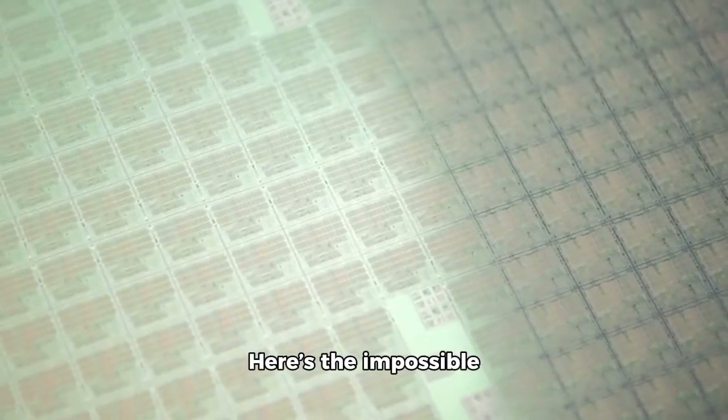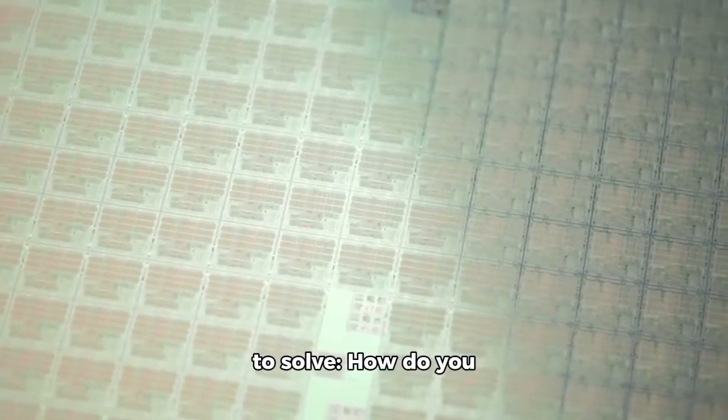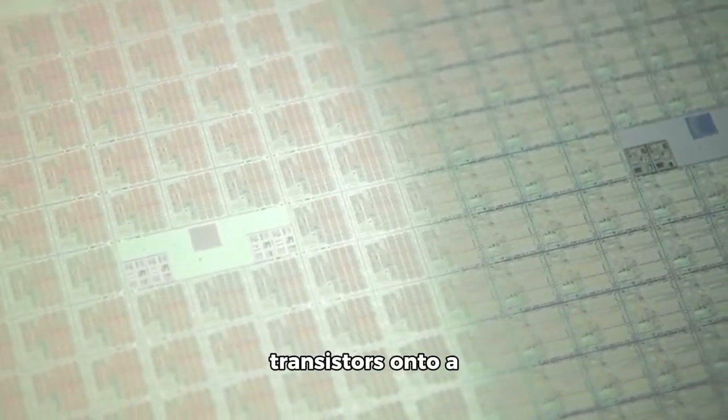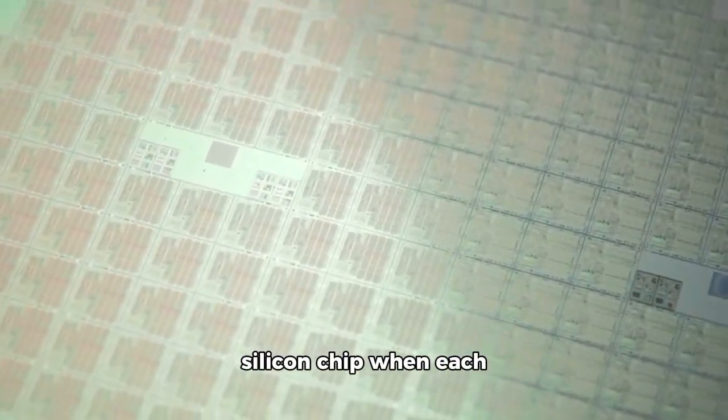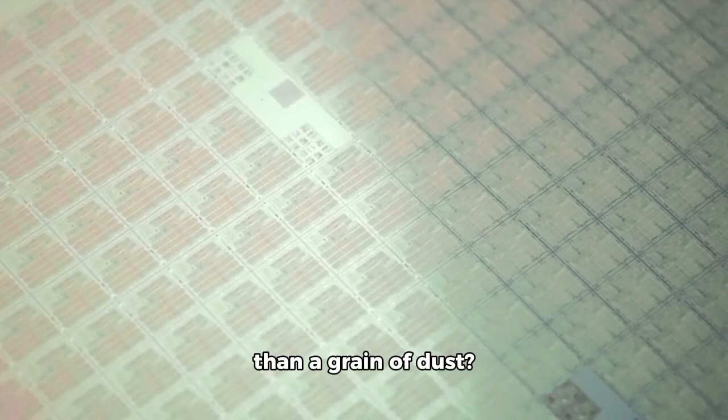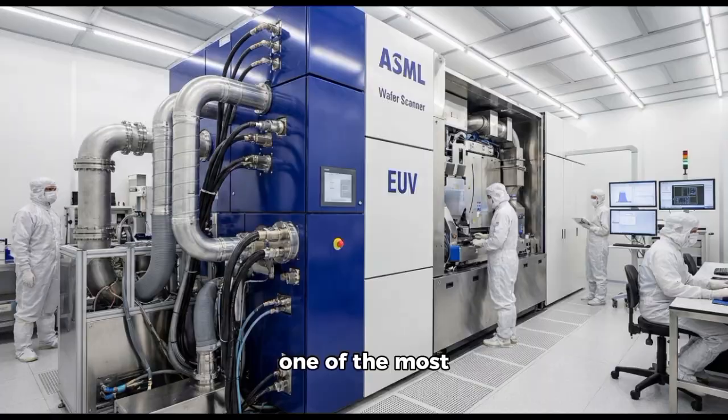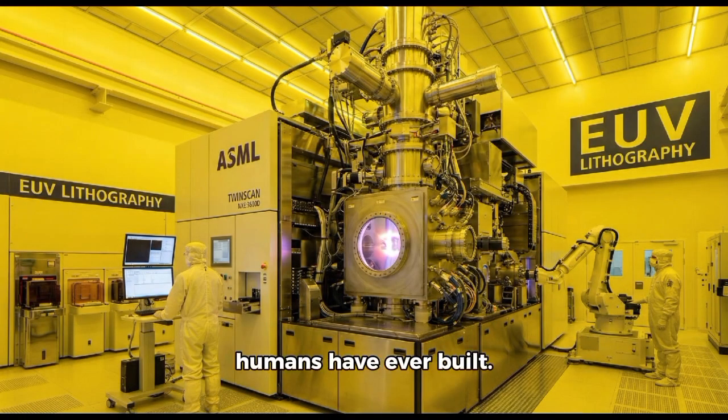Here's the impossible question engineers had to solve. How do you print billions of transistors onto a silicon chip when each transistor is smaller than a grain of dust? The answer is EUV lithography, and it's one of the most extreme technologies humans have ever built.